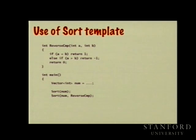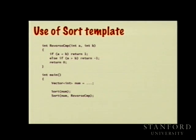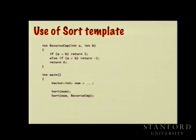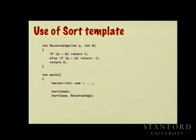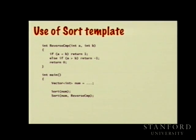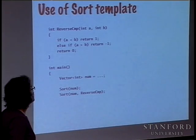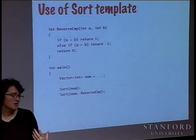For example, sorting a vector of numbers in ordinary increasing order requires no second argument. But if I want to sort in inverted order — largest values first — I don't need a new sorting routine. I just write an inverted compare function: if A is less than B, return one (meaning B goes before A), and correspondingly for the other case, returning zero when equal. This gives us control for primitive types as well as for types where built-in operators aren't defined.